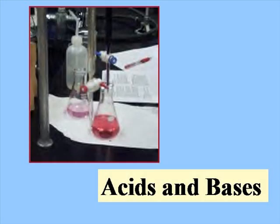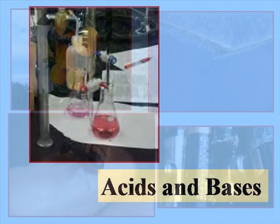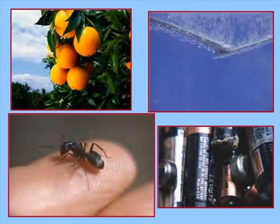We're going to cover some very basic information about acids and bases. Acids are all around you — in oranges, we have ascorbic acid and citric acid.